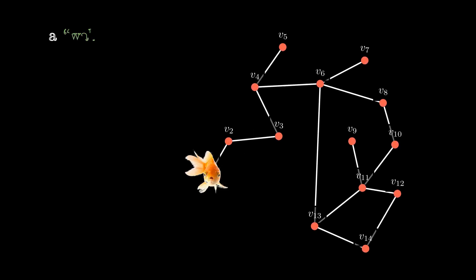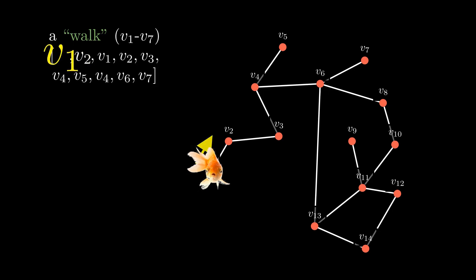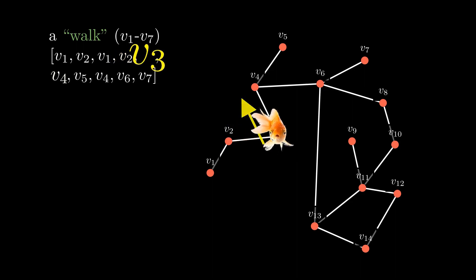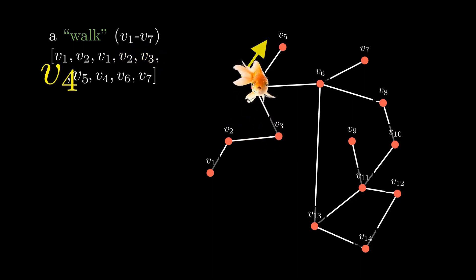Some other important terms in graph theory are walk and path in graph G. This is an example of a walk in graph G, from the vertex V1 to V7. You can see each edge as a bridge or route to go from a vertex to another vertex. For a walk, we are allowed to visit the same vertex more than once.